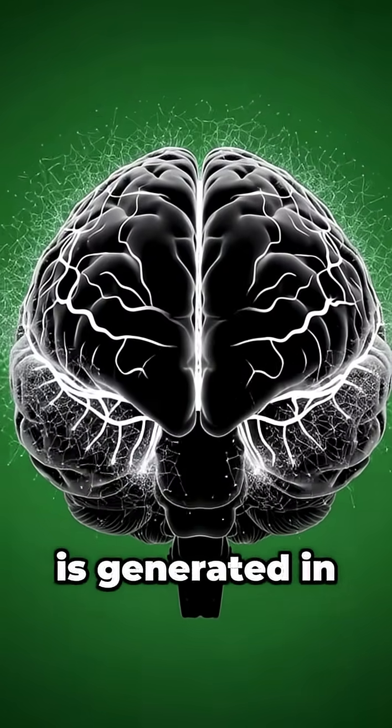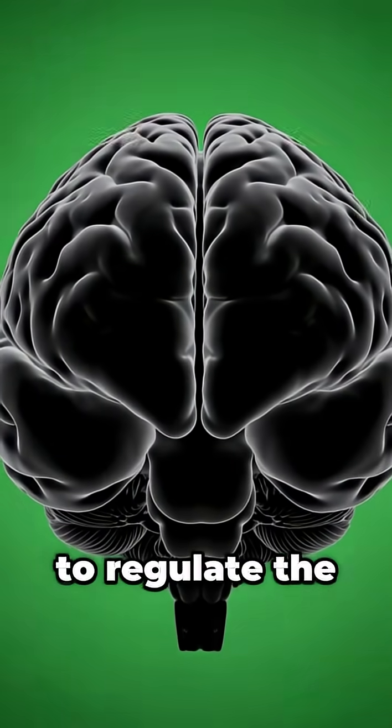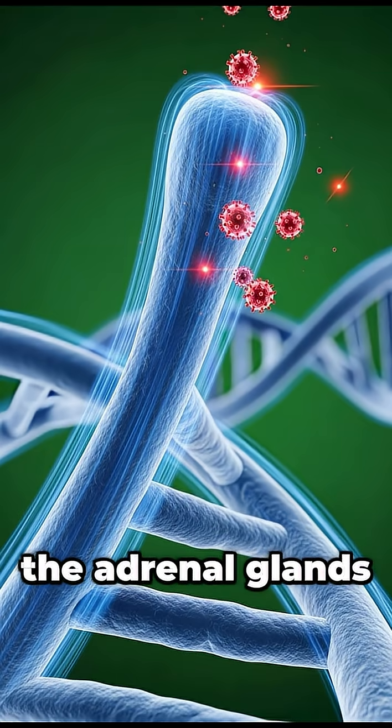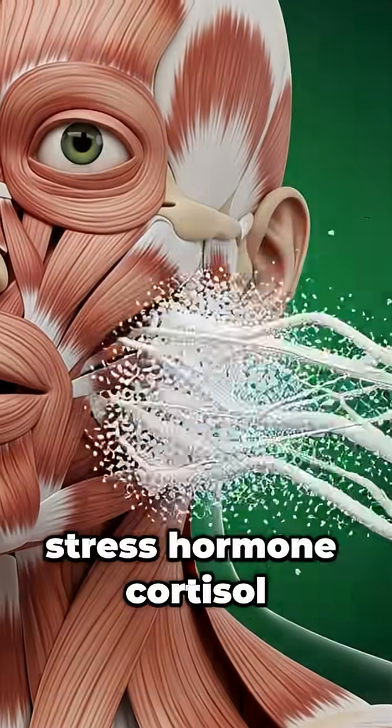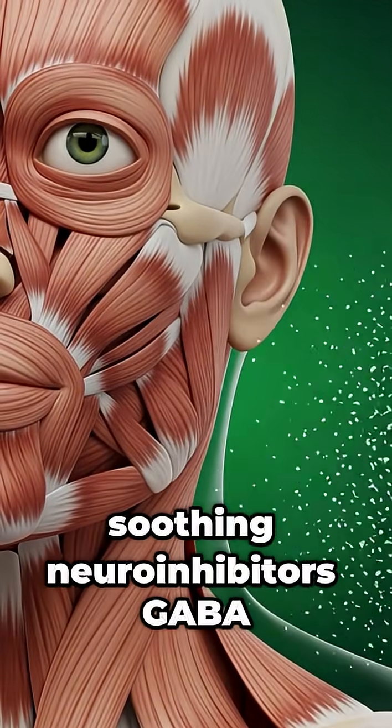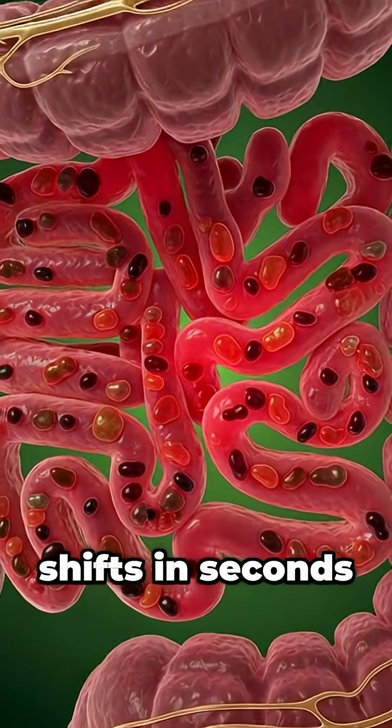A calm signal is generated in the brainstem, flowing instantly down this cranial highway to regulate the heart and gut. This signal reaches the adrenal glands. Watch as the stress hormone cortisol is visibly pulled back, replaced by the soothing neuroinhibitors GABA and serotonin. The chemical climate shifts in seconds.